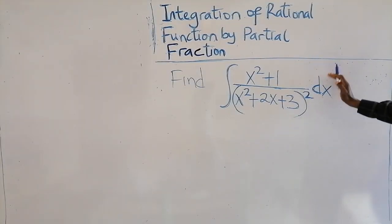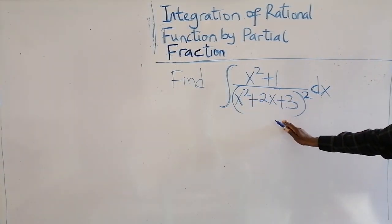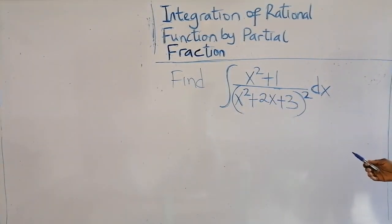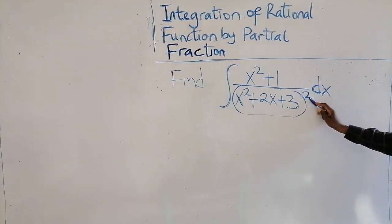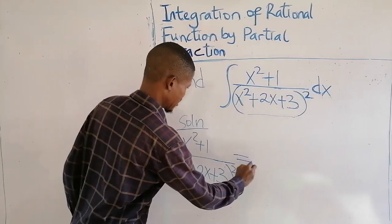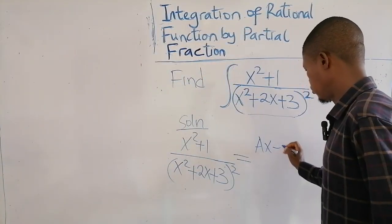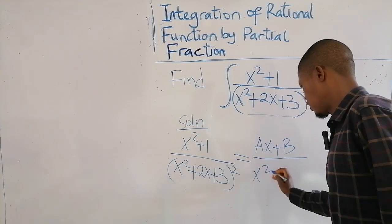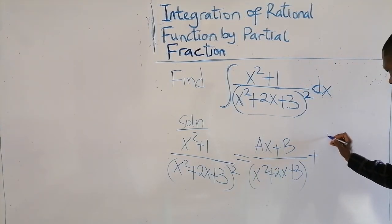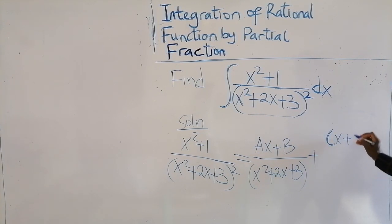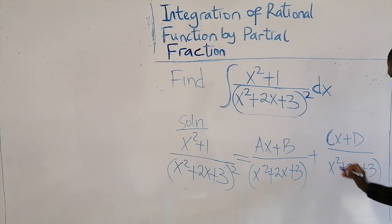Here we have another question. Find the integral of this fraction. If you check this question, the denominator is quadratic and it's been repeated twice. This fraction is going to be equal to ax plus b over the quadratic expression to the power one, plus cx plus d over the quadratic expression to the power two.